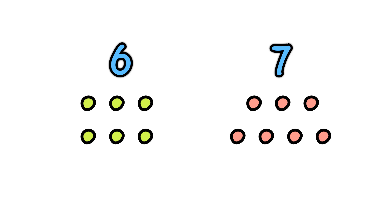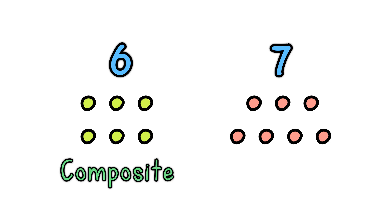And we give them names. When a number can be divided up evenly, it is a composite number. When a number cannot be divided up evenly, it is a prime number. So 6 is composite and 7 is prime.